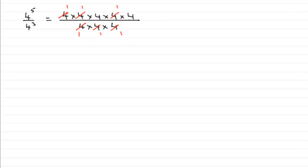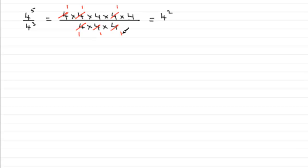So what do I get when I simplify this? Well I've got 1 times 1 which is 1, times 4 which is 4, times 1, still 4, times another 4. I know that 4 times 4 is 16, but the purpose of this exercise is to write it as a power — so I'm going to write this as 4 to the power 2, or 4 squared. We've just got the 4 times 4 on the top. On the bottom we've got 1 times 1 times 1, which is just 1. So 4 squared divided by 1 is simply 4 squared.